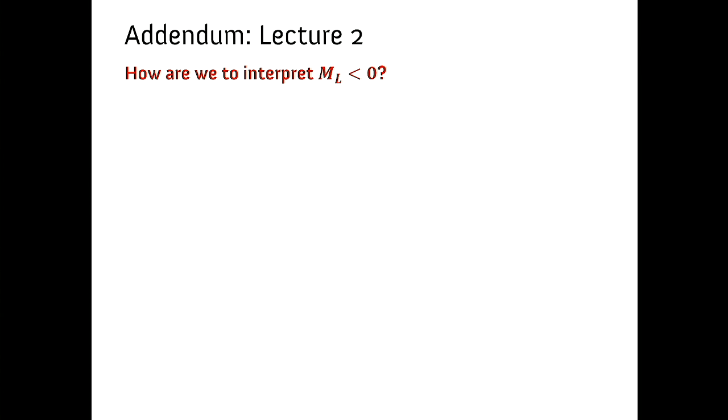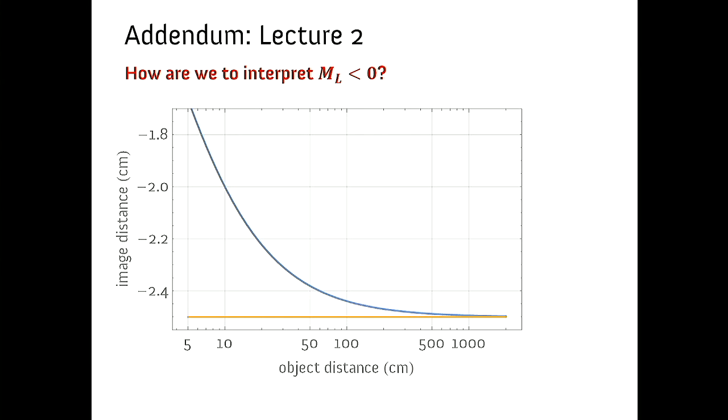But first an addendum from lecture two. We looked at longitudinal magnification, about how far things seem in the image plane compared to how far they are from the mirror or lens. There was a question about how to interpret a negative longitudinal magnification. This might give you the false impression that as objects get closer to the mirror their image gets further away. That is not the case because the image distance is a negative quantity. The images we see in rear view mirrors are upright and inverted but they're imaginary images appearing behind the mirror.